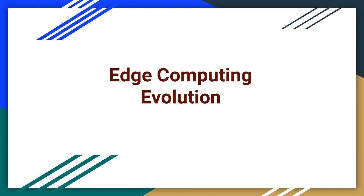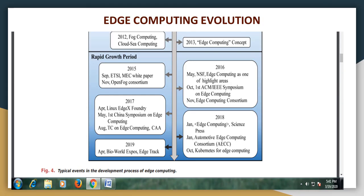Now let us look at edge computing evolution — where did it originate and how did it develop to become what it is today. The idea of edge computing came into the public domain in the year 2012. At that time it was called fog computing and also cloud computing. But the concept was further developed and started being called by the name edge computing in 2013. Thereafter it saw rapid growth from 2015 through 2018, with many developments, and finally ended up as a mainstream technology as it is today.